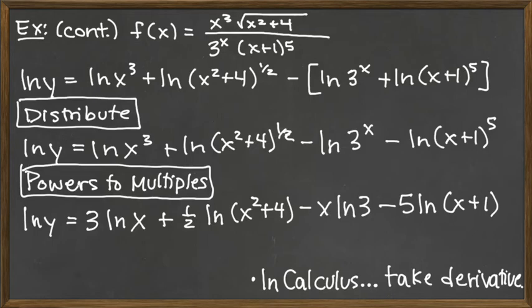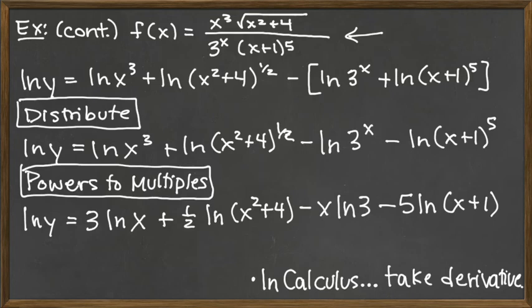At this point you'd be ready in calculus to take the derivative. You might ask: was all that time and effort really better? Well, think back to the original function. That would involve a quotient rule, and within that quotient rule, two product rules — one for the top and one for the bottom — plus a chain rule and a special derivative for 3 to the x. That's a pretty involved nested problem, whereas here it's a lot of steps, but they're algebraic steps, and the derivatives from this point are fairly easy.